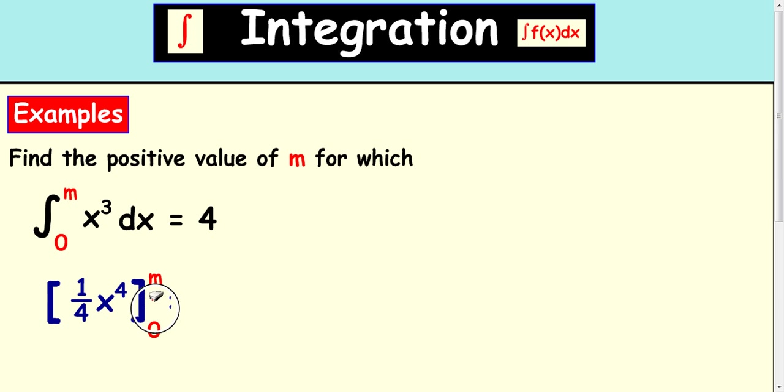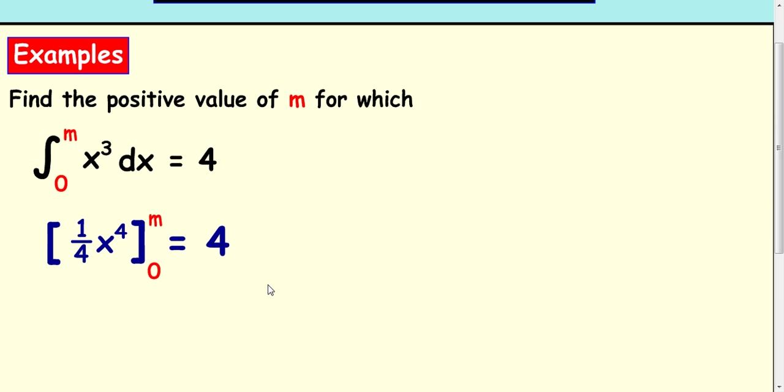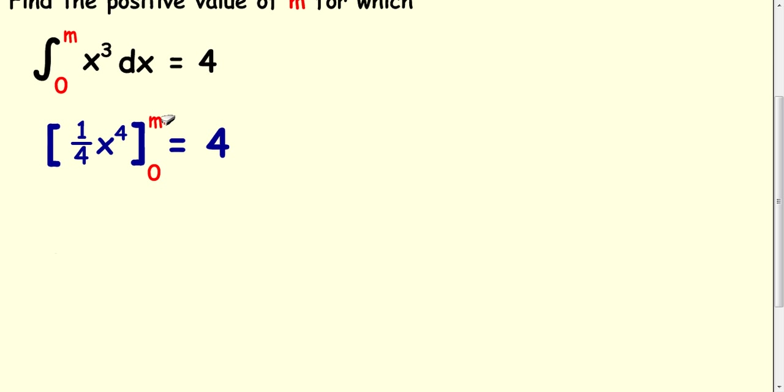And your limits are 0 and m, and this still comes to 4. So then we can put our upper limit in first and then subtract our lower limit.